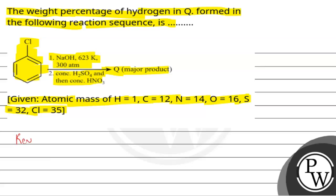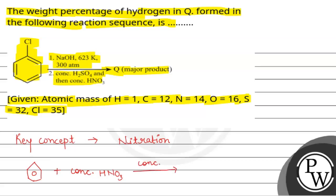The key concept here is nitration. Suppose we have a compound like benzene. If we react benzene with concentrated HNO₃ in the presence of concentrated H₂SO₄, then we get nitrobenzene with an NO₂ group.